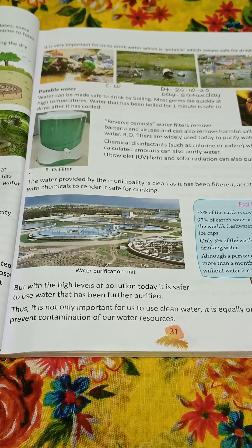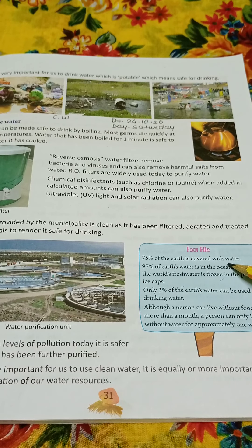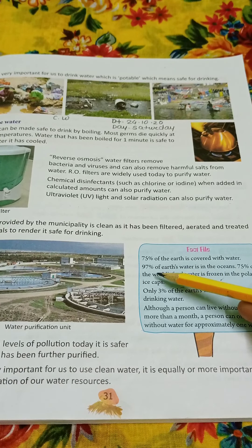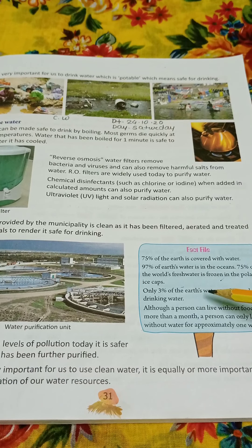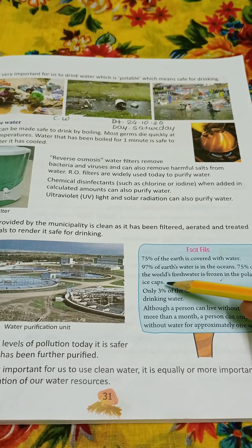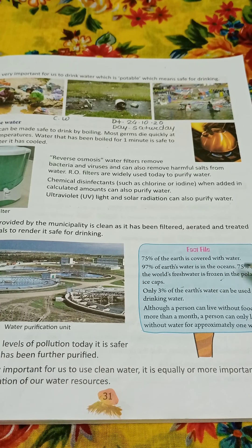Now, fact file. 75% of the earth is covered with water. Earth is 75% covered with water. 97% of the earth's water is in the ocean. 75% of the world's fresh water is frozen in the polar ice cap. Earth's 97% water is in the ocean.